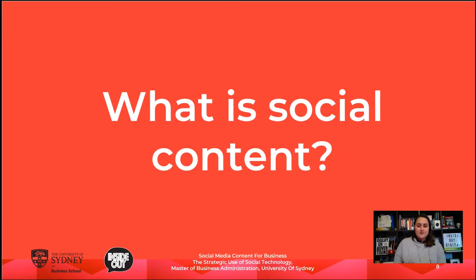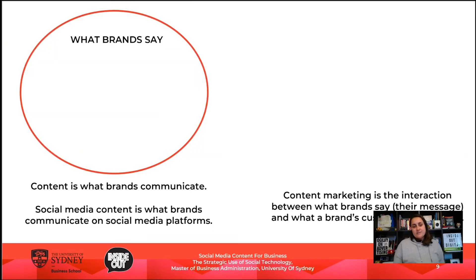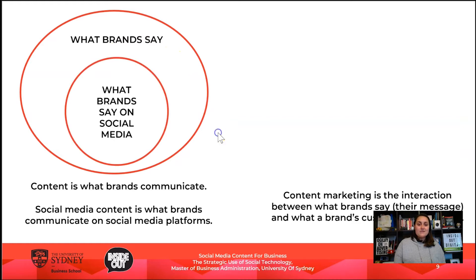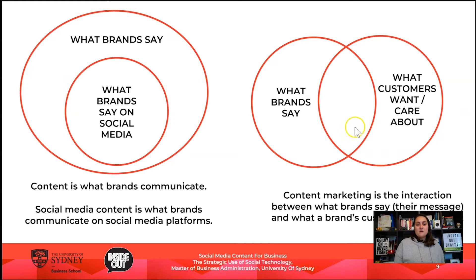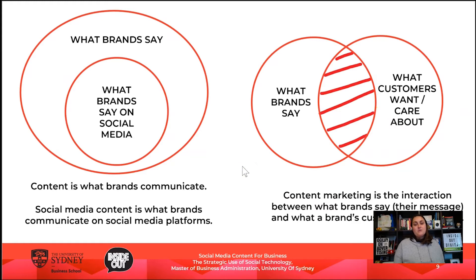So what is social content? Content is what brands communicate. Social media content is what brands communicate on social media. Now, what brands say could be always talking about themselves, but customers won't care about it unless it's relevant to them. So the interaction between what brands say and what customers actually care about is known as content marketing. And effective content marketing actually follows up by using that content to achieve a marketing goal.